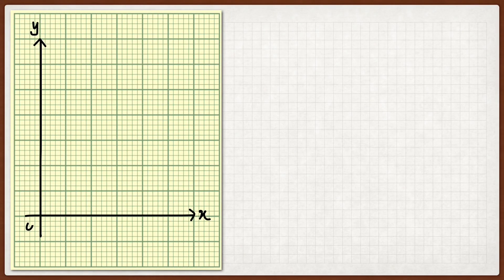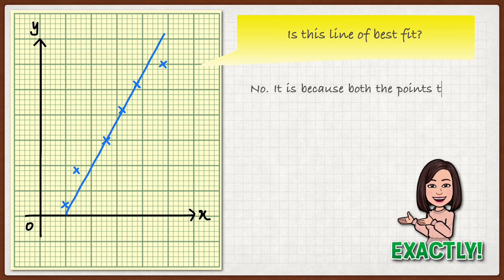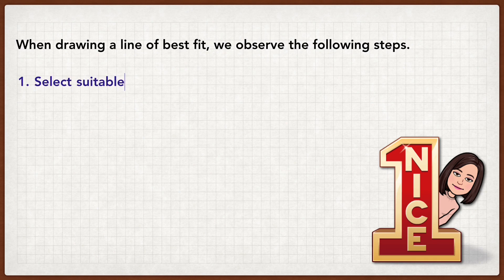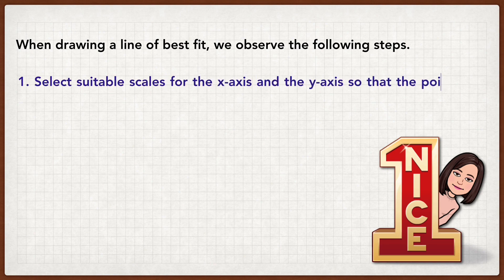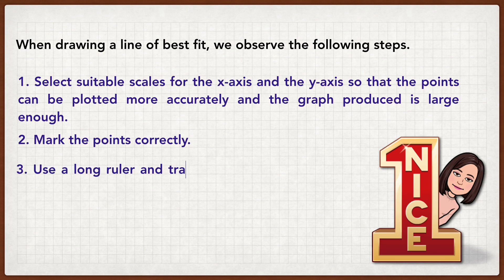Look at another example. Is this a line of best fit? No, because both of the points that do not fit onto the line are on the same side of the line. When drawing a line of best fit, we observe the following steps: select suitable scales for the x-axis and y-axis so that the points can be plotted more accurately and the graph produced is large enough. Mark the points correctly. Use a long ruler and transparent ruler to draw the line of best fit.